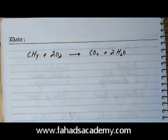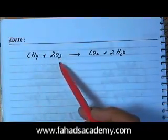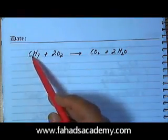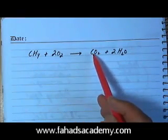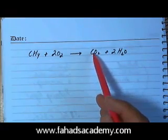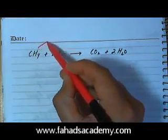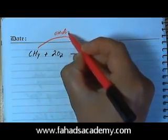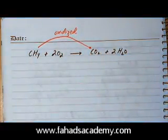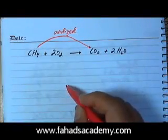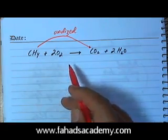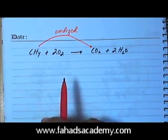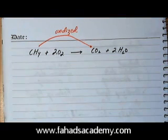Moving on to another redox equation, we have methane burning with oxygen, producing carbon dioxide and water. If you look at this equation carefully, carbon had hydrogen and it lost those hydrogens because it formed carbon dioxide — so it's losing hydrogen and gaining oxygen. Whenever something is gaining oxygen, it's getting oxidized. So we have found that carbon is getting oxidized, and now we need oxidation states to figure out which substance is getting reduced.